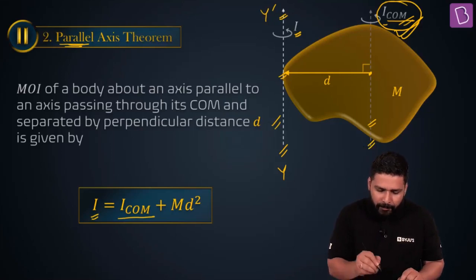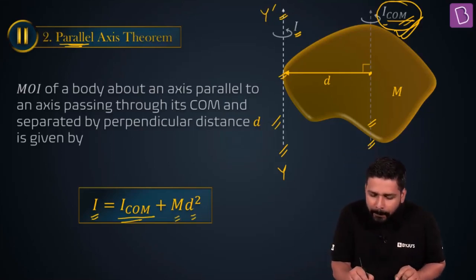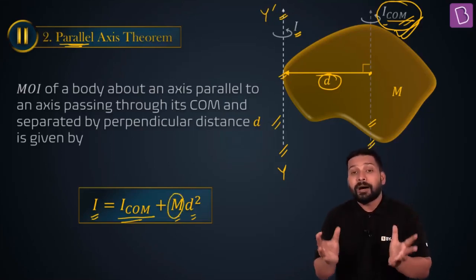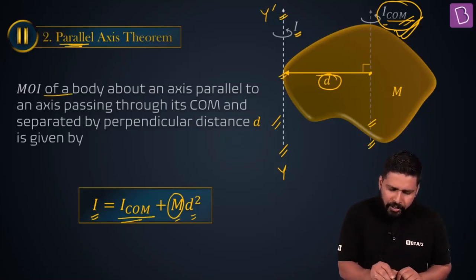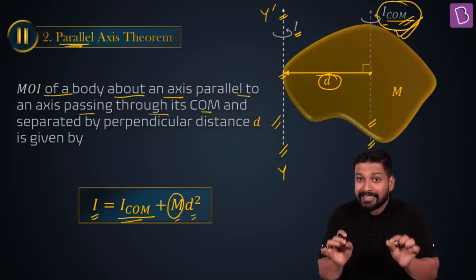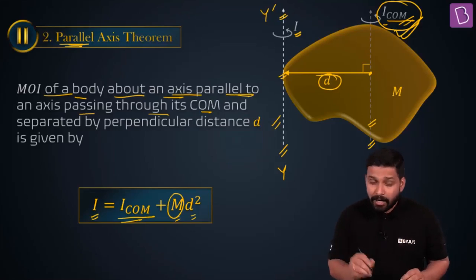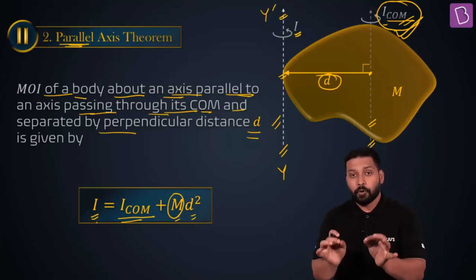So the full formula is: moment of inertia about the center of mass plus Md². What is d? d is the perpendicular distance between the two axes. And m is the total mass of the body. The statement is: the moment of inertia of a body about an axis parallel to an axis passing through its center of mass, and separated by a perpendicular distance d, is given by I = I_com + Md².